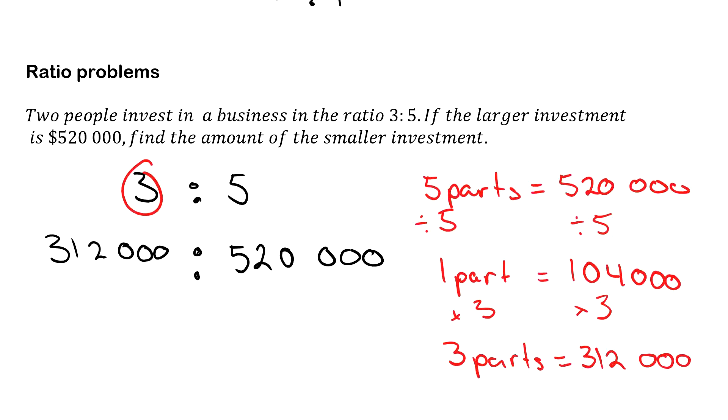So we call that the unitary method. You find what 1 part is worth and then use that to find any unknowns you need. So again, you start with what you know. I knew 5 parts was $520,000. I divided everything by 5 to get 1 part, which is worth $104,000. I needed 3 parts, so I times everything by 3.